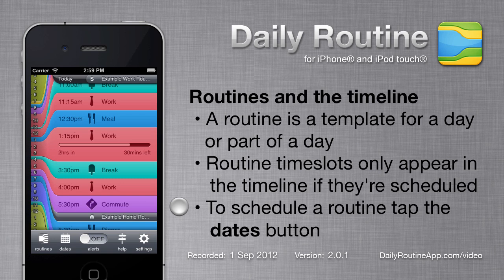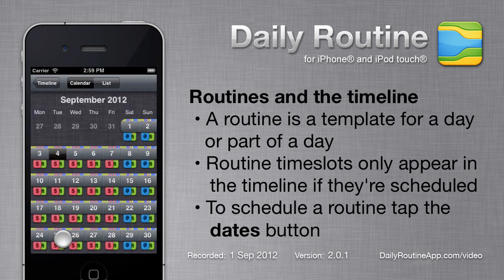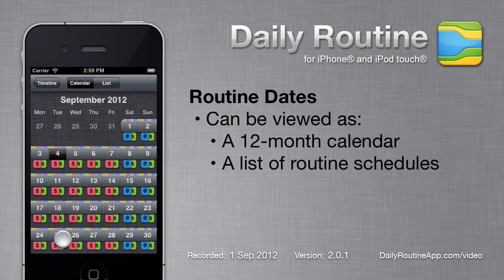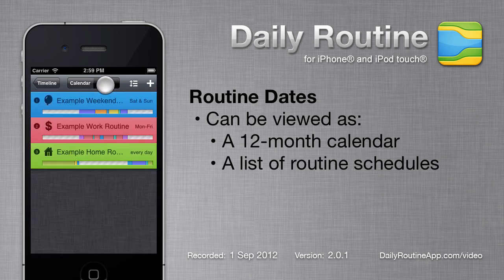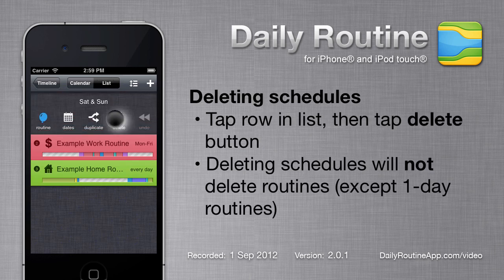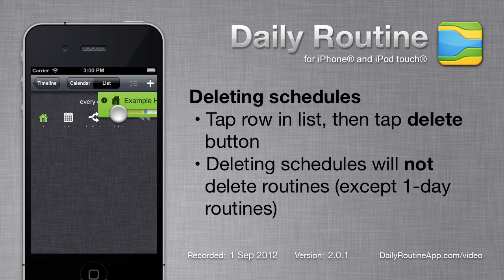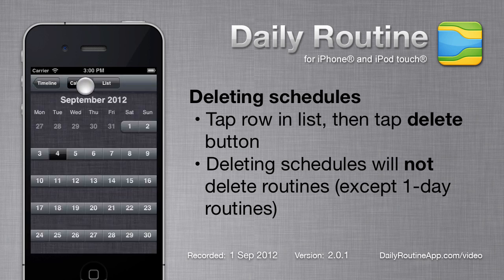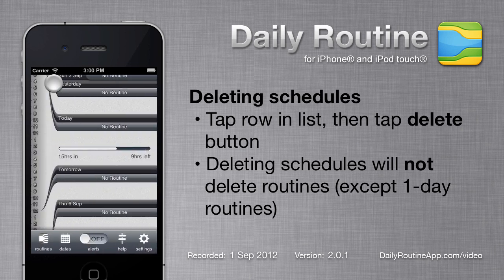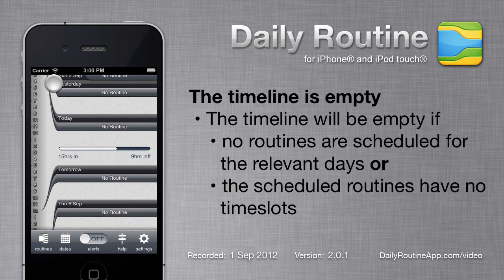To begin assigning routines to dates, tap the Dates button. We can view our routine schedules in calendar form or list form. These are the default routine schedules. We can delete them by tapping a row in the list, then tapping the Delete button. Now the list and the calendar are empty. If we return to the timeline, it is also empty. This is because Daily Routine does not know which routines to display.